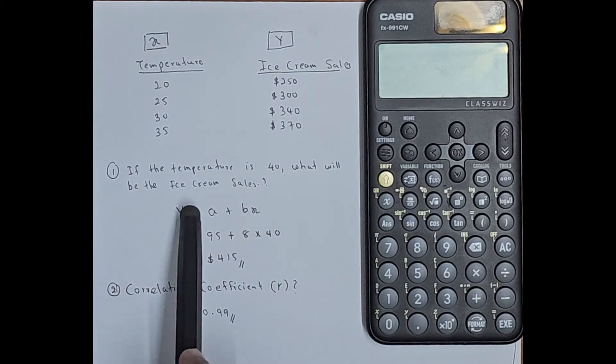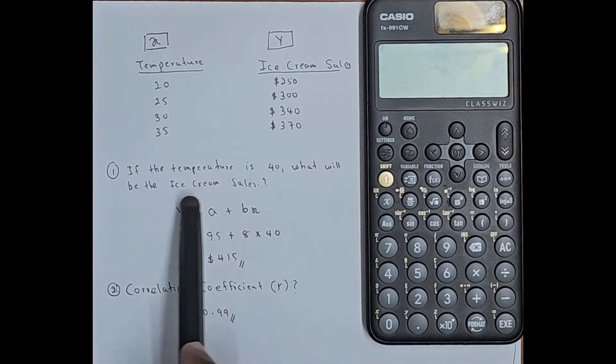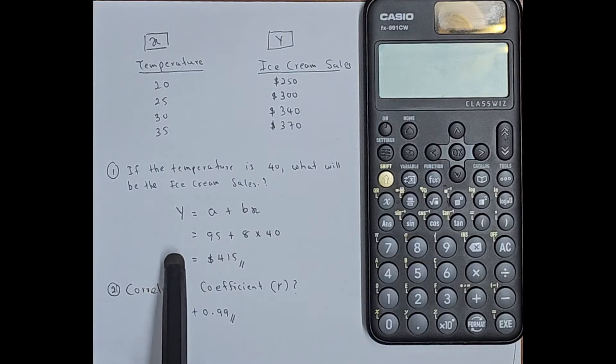The first question I'm asking: if the temperature is 40, what will be the ice cream sales? So we can use this Y equals A plus BX formula.